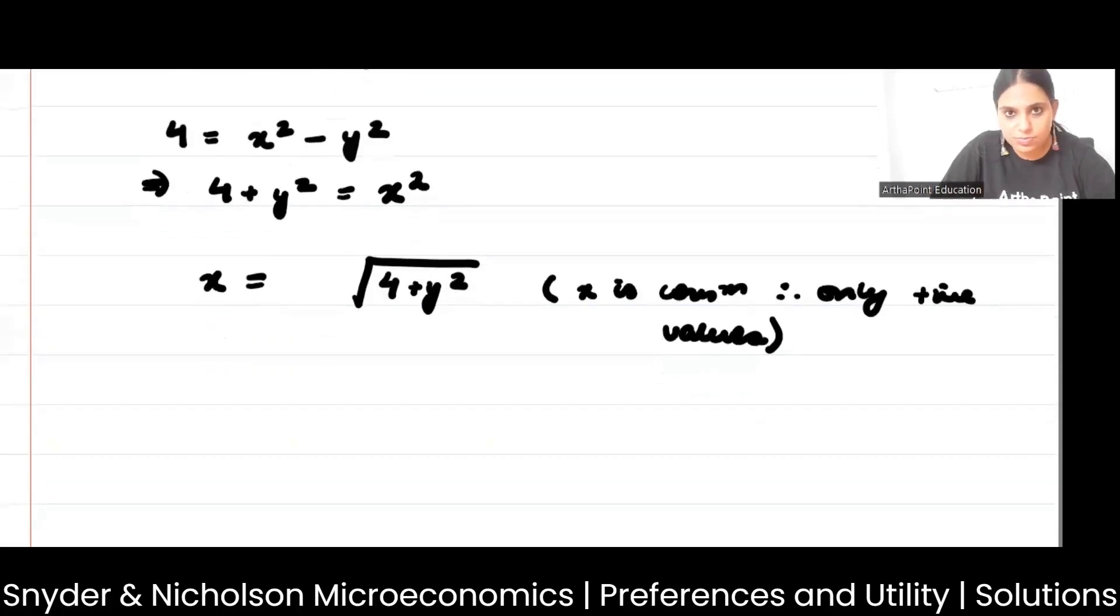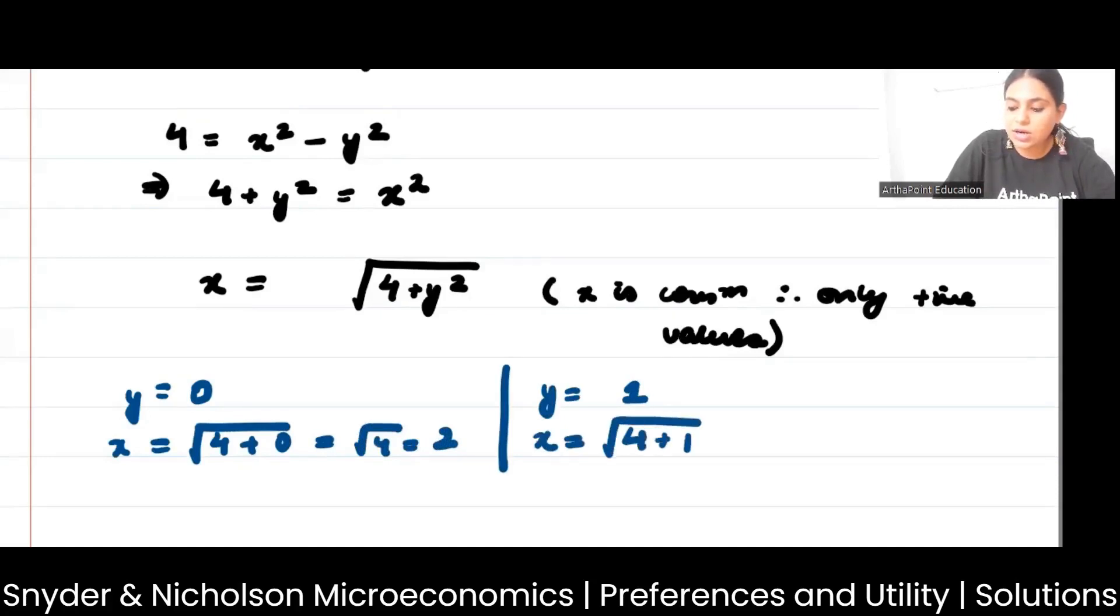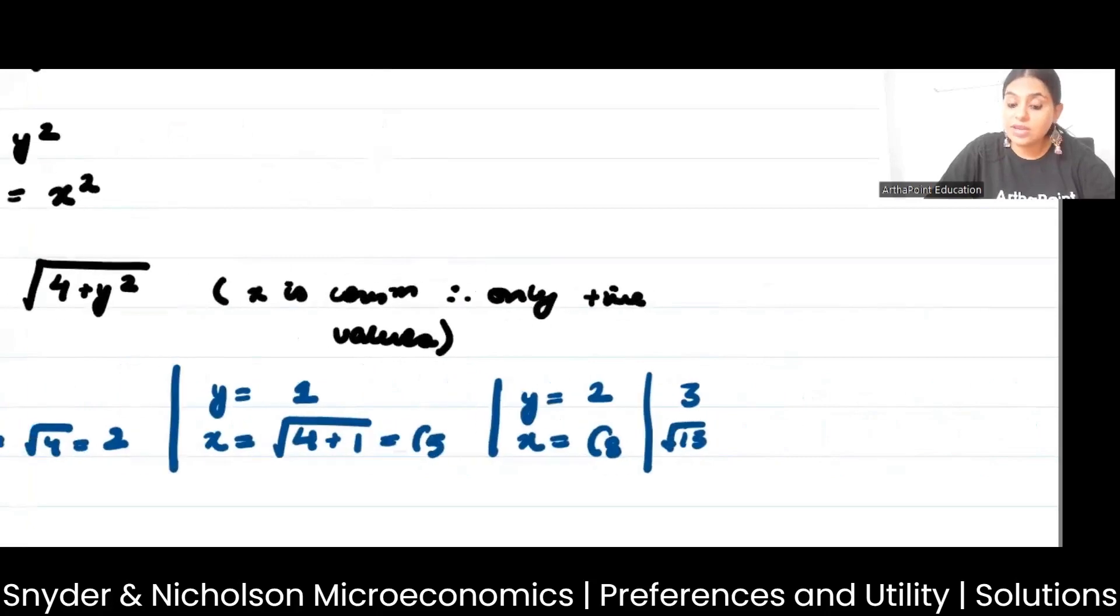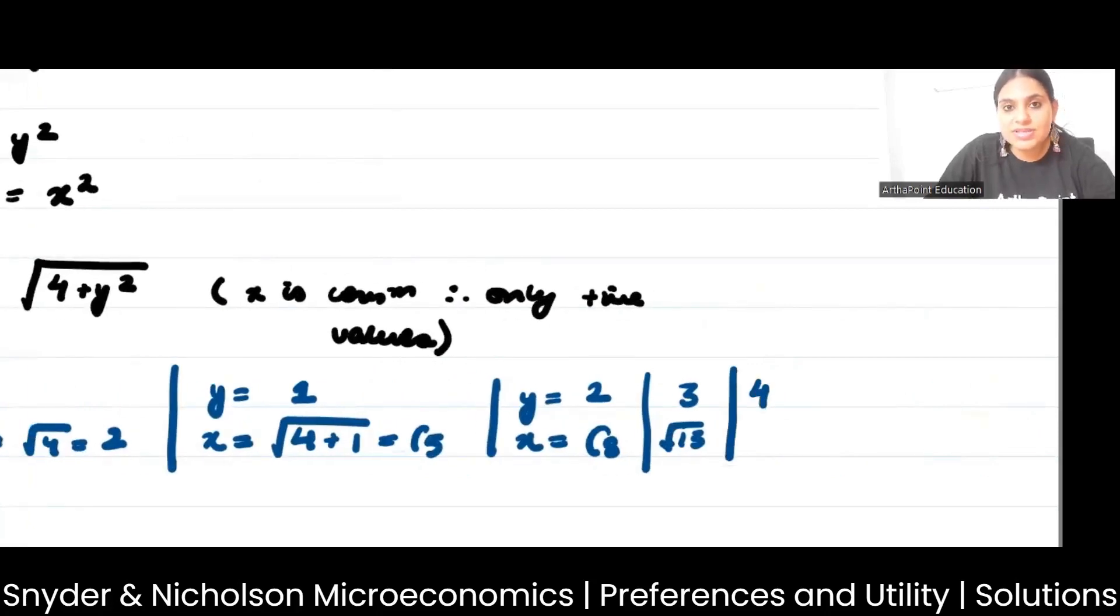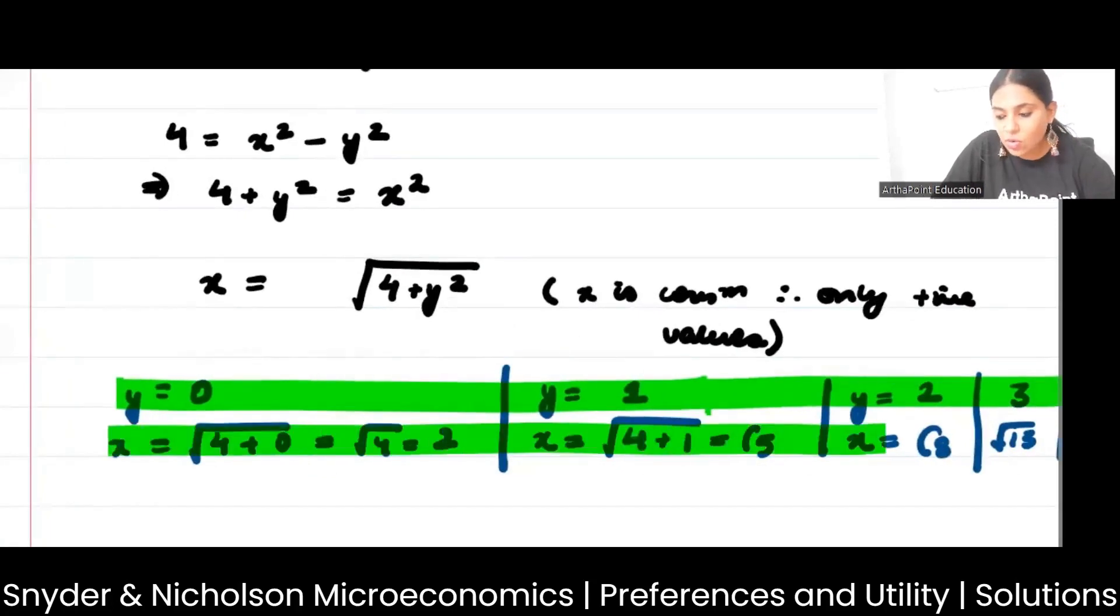Now let's say y will also take only 0 or positive values. Let's say you consume 0 units of y. So what will be x? x will be square root of 4 plus 0, which could be 2. Let's say you take y as 1. What will be x? x will be 4 plus 1 under root, which will be square root of 5. Let's say you take y as 2. Then what will be x? Square root of 8. Let's say you take y as 3. What will be x? Square root of 3 squared is 9 plus 4 is 13. When you take y as 4, 4 squared is 16 plus 4 is square root of 20. Do you see that as y is increasing from 0 to 1 to 2 to 3 to 4, x is also increasing.